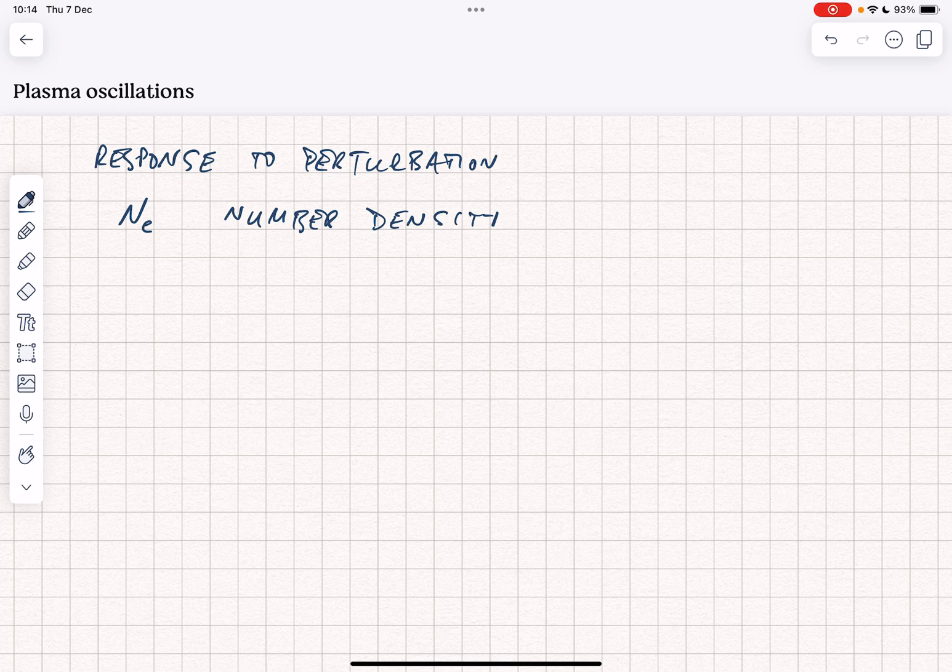The electrons are free to move relative to the ions. So we're going to imagine what happens to a slab of plasma here. And we're going to ask the question, what happens if we displace the electrons relative to the ions just by a little bit? I'm going to draw the displaced electron slab there. That displacement we are going to label as X.